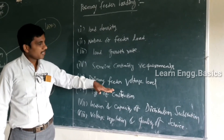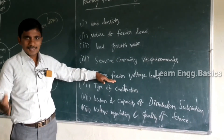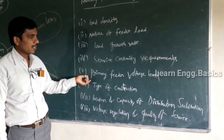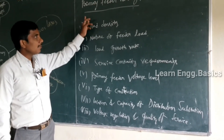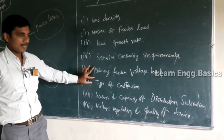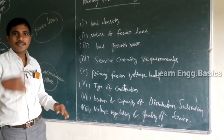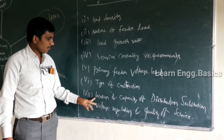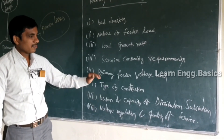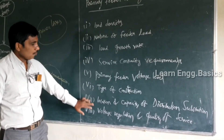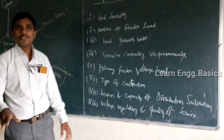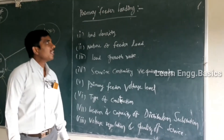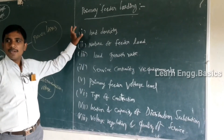If the feeder voltage level is low, current and voltage drops will be maximum. If the primary feeder voltage level is less, larger current will flow. Increasing the primary feeder voltage level reduces the primary feeder loading. Other factors include type of construction, location, capacitors at the distribution substation, voltage regulating equipment in the substation, and quality of service required — these are the various factors that depend on primary feeder loading.